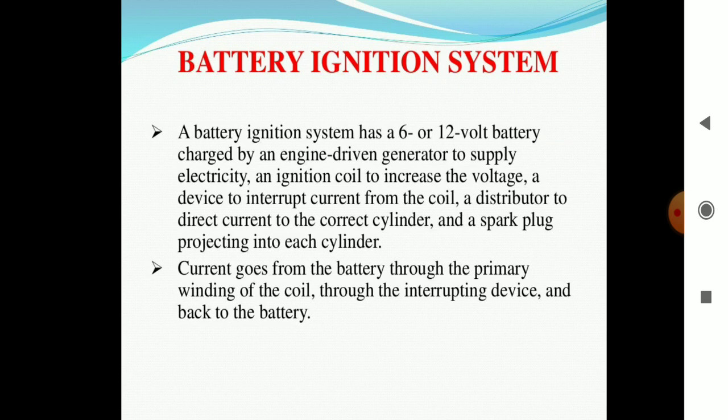The current goes from the battery through the primary winding of the coil and through the interrupting device and back to the battery. This is the feedback system and it is the complete loop which is formed through the battery system.